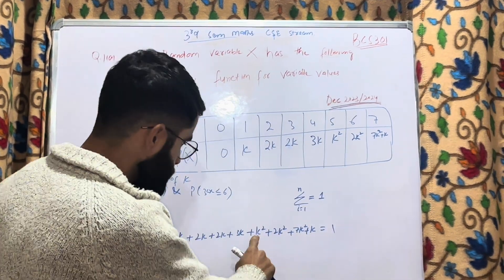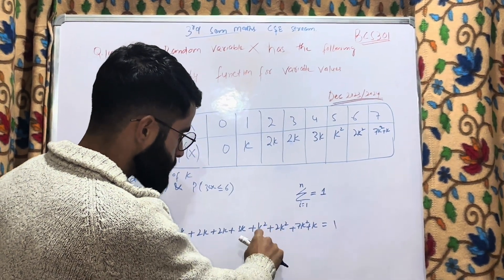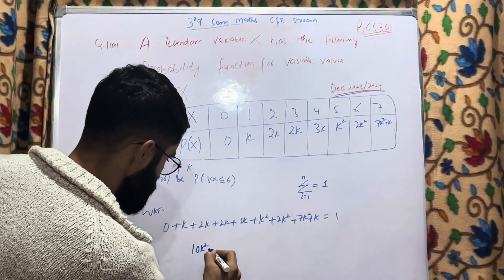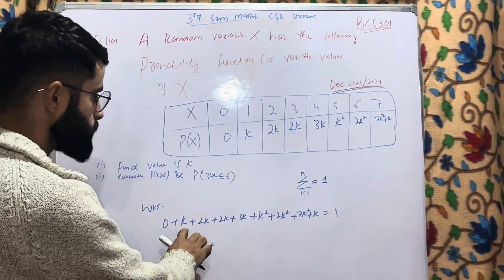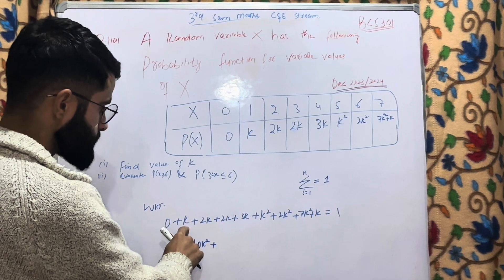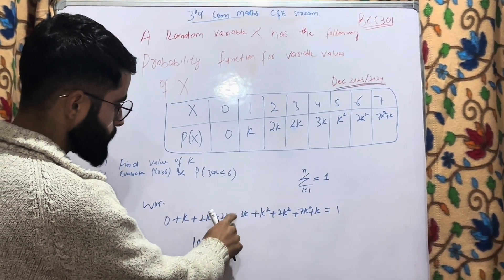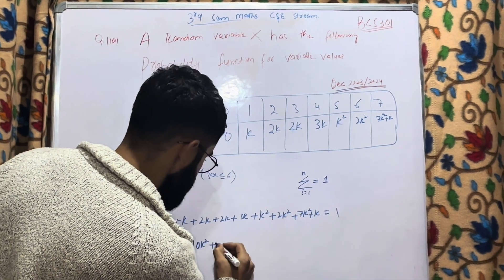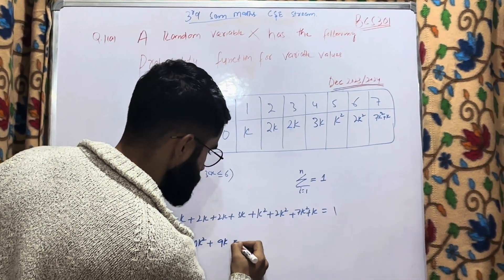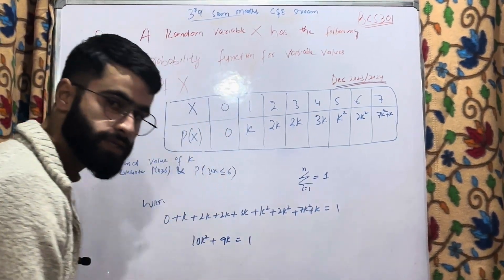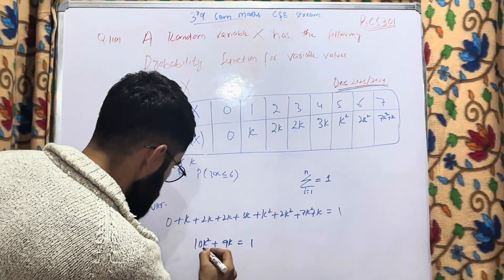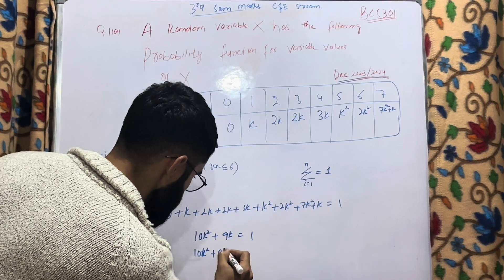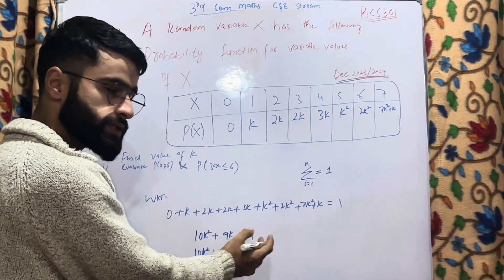Now I will simplify. Taking the square terms: k² + 2k² + 3k² + 7k² — wait, let me recount: k² + 2k² is 3k², plus 7k² gives 10k². For the linear terms: 2k + k is 3k, plus 2k is 5k, plus 3k is 8k, plus k is 9k. So we get 10k² + 9k = 1.